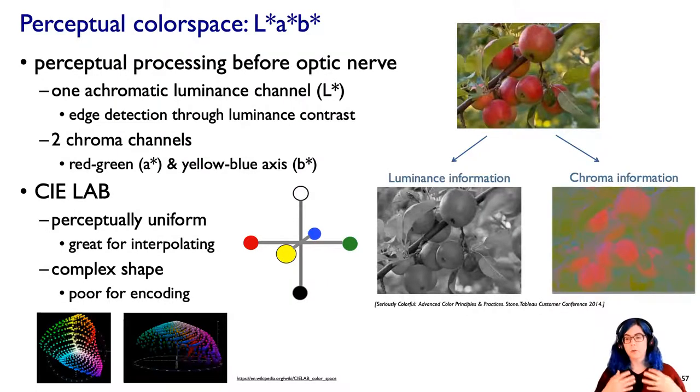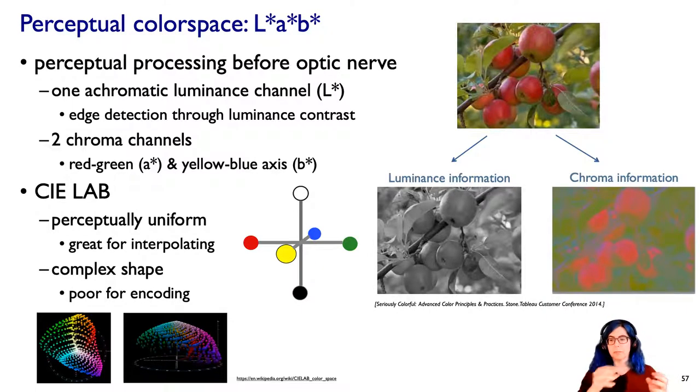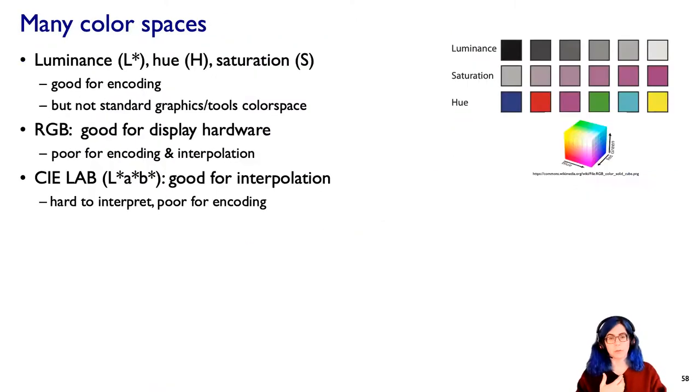This color space has been essentially derived by direct measurements of how humans perceive color. So it is a perceptually uniform space that's really good for interpolating between two colors. Unfortunately, it's very hard to think about. It doesn't have a nice simple cube shape like RGB. It's this weird, distorted, complicated shape. These two chroma channels of red-green and yellow-blue just don't map to how people think about color. So although it's great for interpolation, not so good for visual encoding.